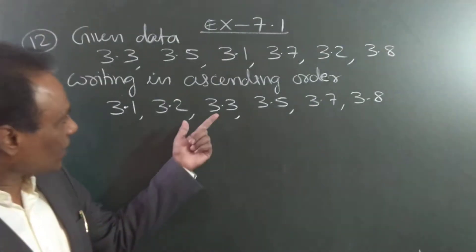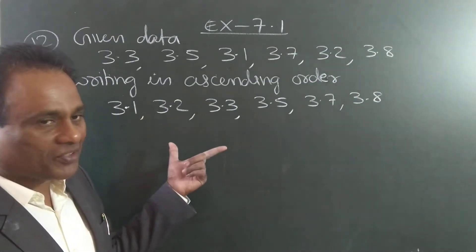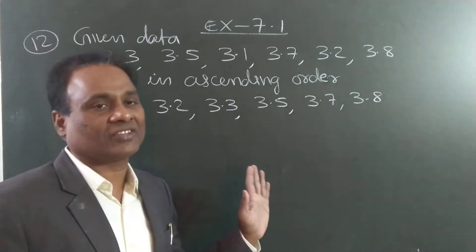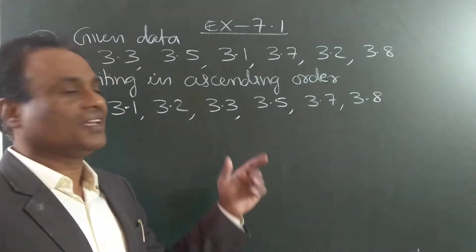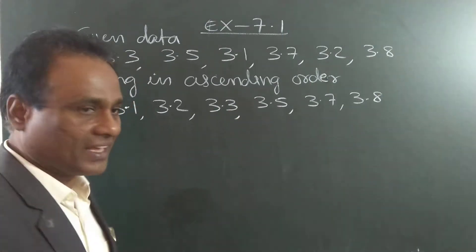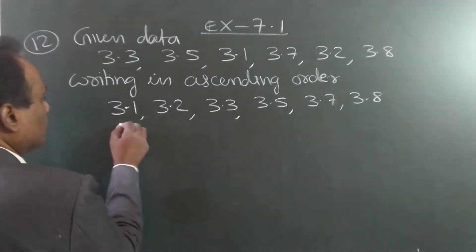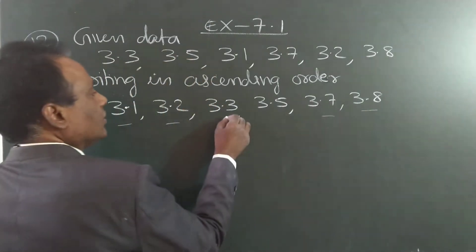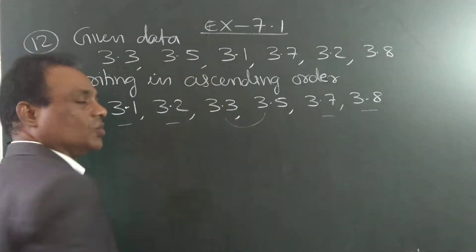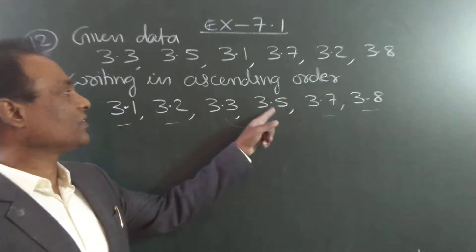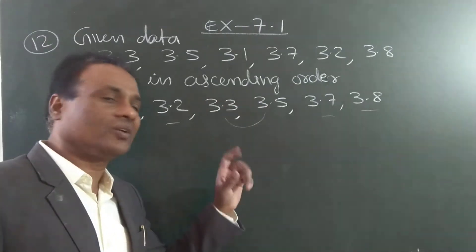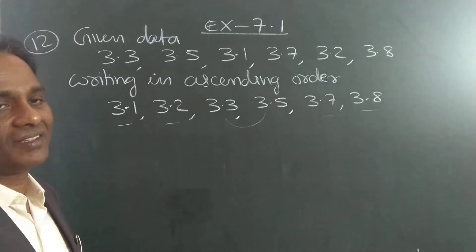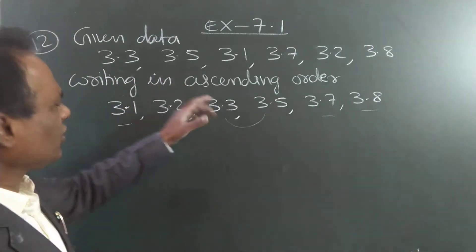Then find the middle observation. If there is only one middle observation, that is the median. If you have two middle observations, we have to take the average. See here — these are the two middle observations. So: 3.3 plus 3.5, add these two and divide by 2.